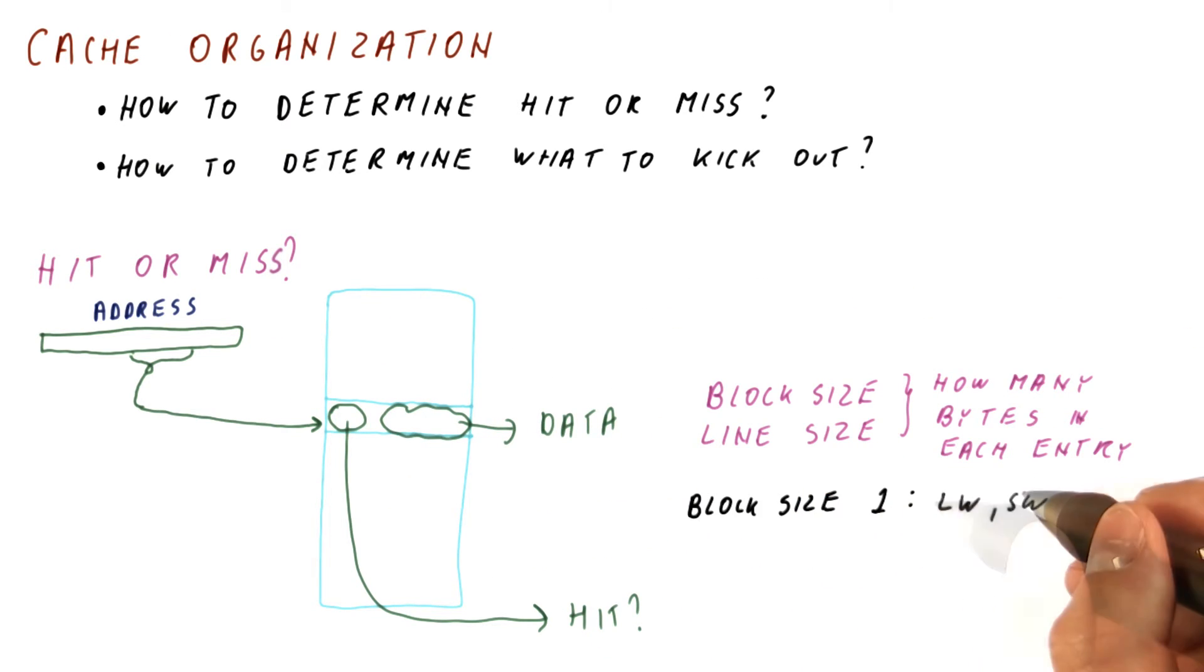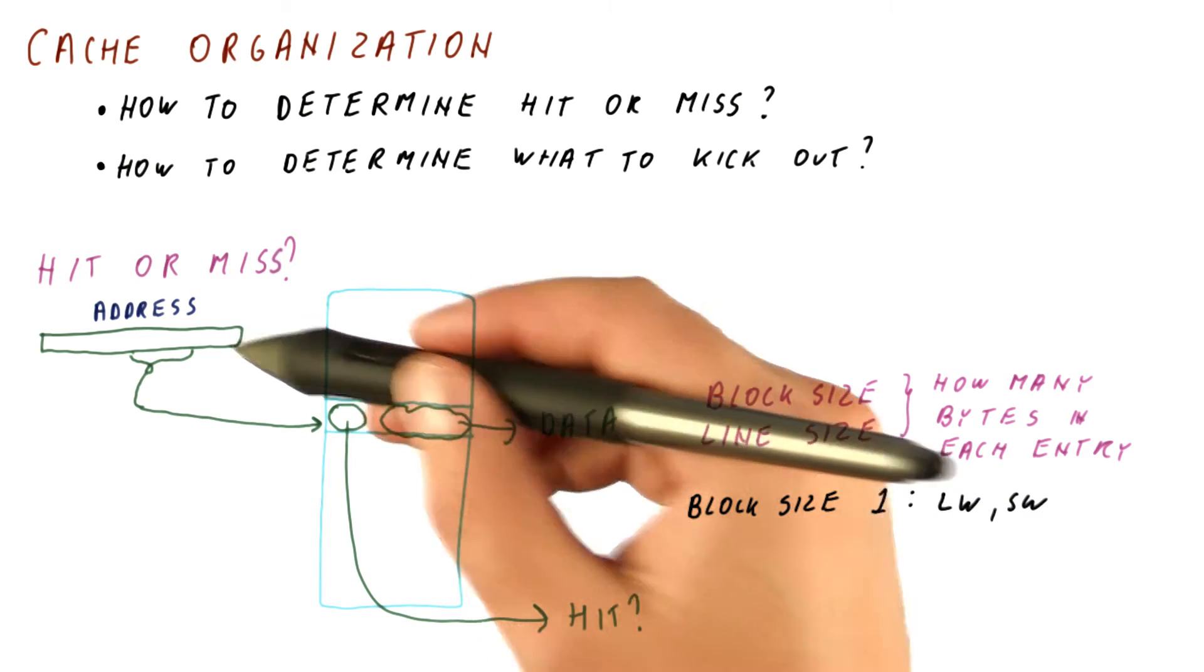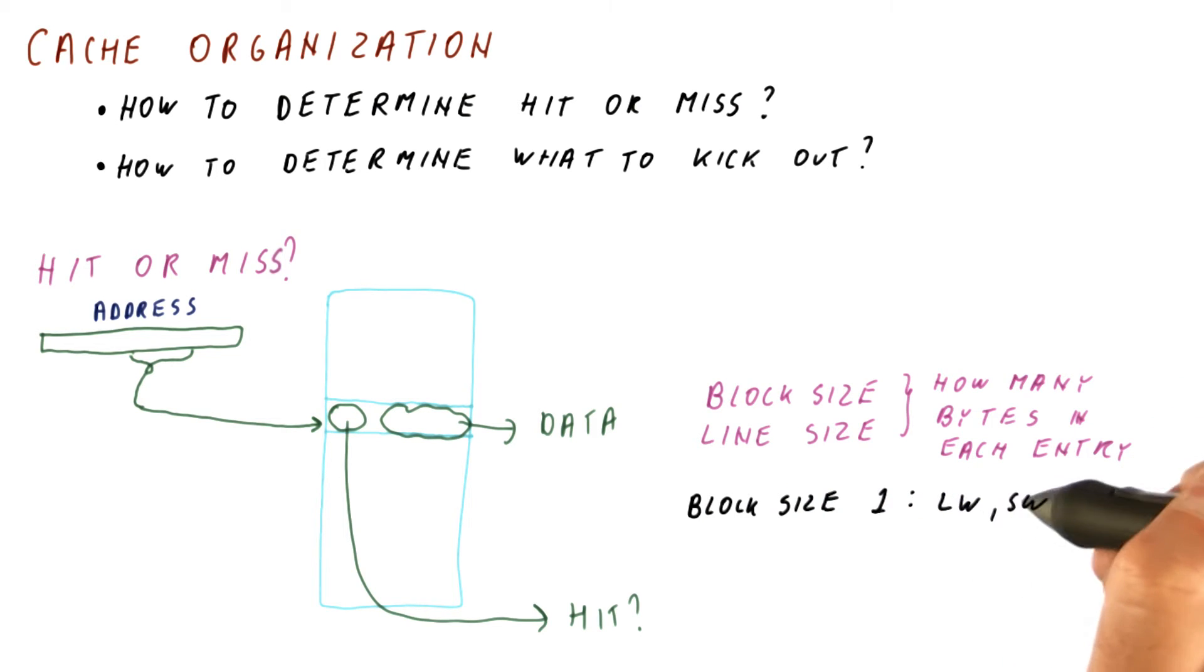That creates several problems. One, usually the processor can issue accesses not only to a single byte, but also, for example, load word and store word will access a four byte location.